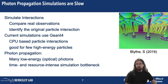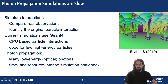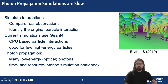What we do is simulate a real observation, then compare the output of the photomultiplier tubes with the simulated interaction, and identify the original particle by fitting it to one of the simulated curves. Current simulations use Geant4, a CPU-based particle interaction model that is quite good for very high-energy particles — simulating their side products, outputs, and so on. But to continue that propagation down to low-energy particles, when one high-energy particle comes in, many low-energy photons are produced at the end of the process, and the propagation of those is a very time and resource-intensive simulation bottleneck.